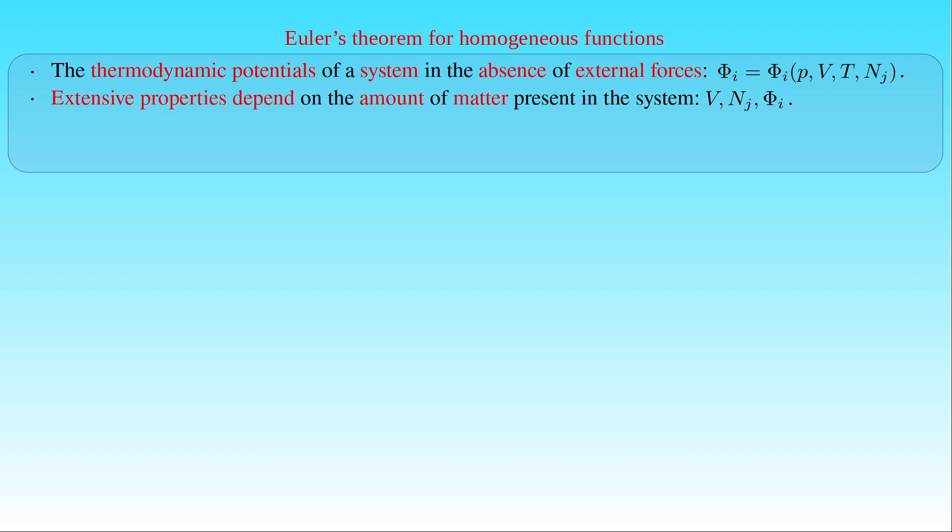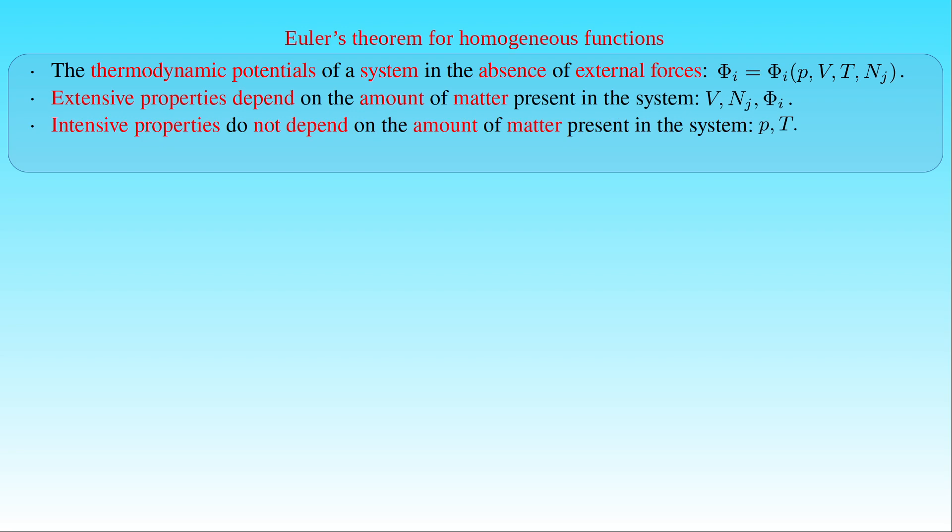When we introduced the thermodynamic quantities describing the properties of an ideal gas, we classified them as extensive and intensive properties. We found that the volume V, or the mass m (the number of particles Nⱼ), are extensive properties depending on the amount of matter present in the system. Since both internal energy and entropy depend on the amount of matter in the system, they are also extensive properties. As a result, all thermodynamic potentials Φᵢ are extensive properties of a system, while only pressure P and temperature T are intensive properties.